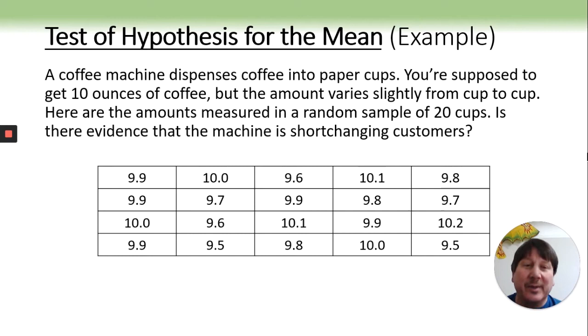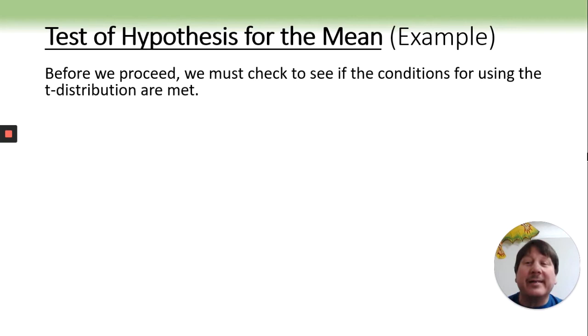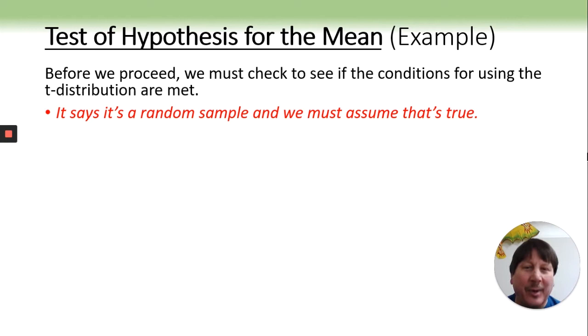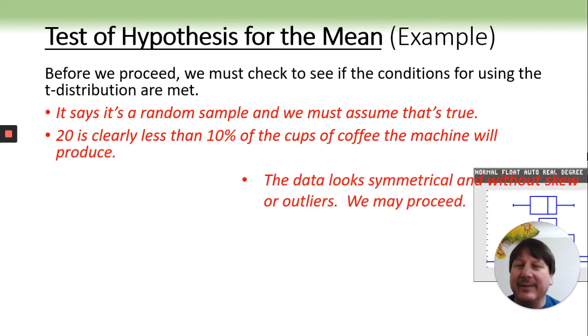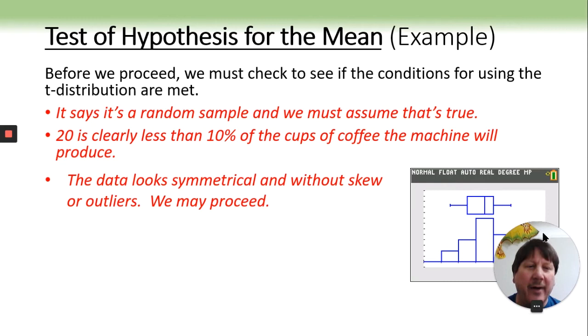You are going to put all the data, all 20 numbers in your calculator. And then we will check to see if our conditions are met. They said it was a random sample. It's probably reasonable to expect. 20, hopefully, is less than 10% of the cups that the machine will produce. Hopefully it can produce more than 200 cups in its lifetime. The data looks to be fairly symmetrical. It looks pretty darn good. With only a sample of size 20, that's probably about as good as you can get.